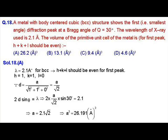MCQ question number 18. In this question, we have been given that a metal with body centered cubic structure shows the first diffraction peak at a Bragg angle of theta equals to 30 degree. The wavelength of X-ray used in this scenario is given to us, that is 2.1 angstrom and we have been asked to calculate the volume of the primitive unit cell of the metal.